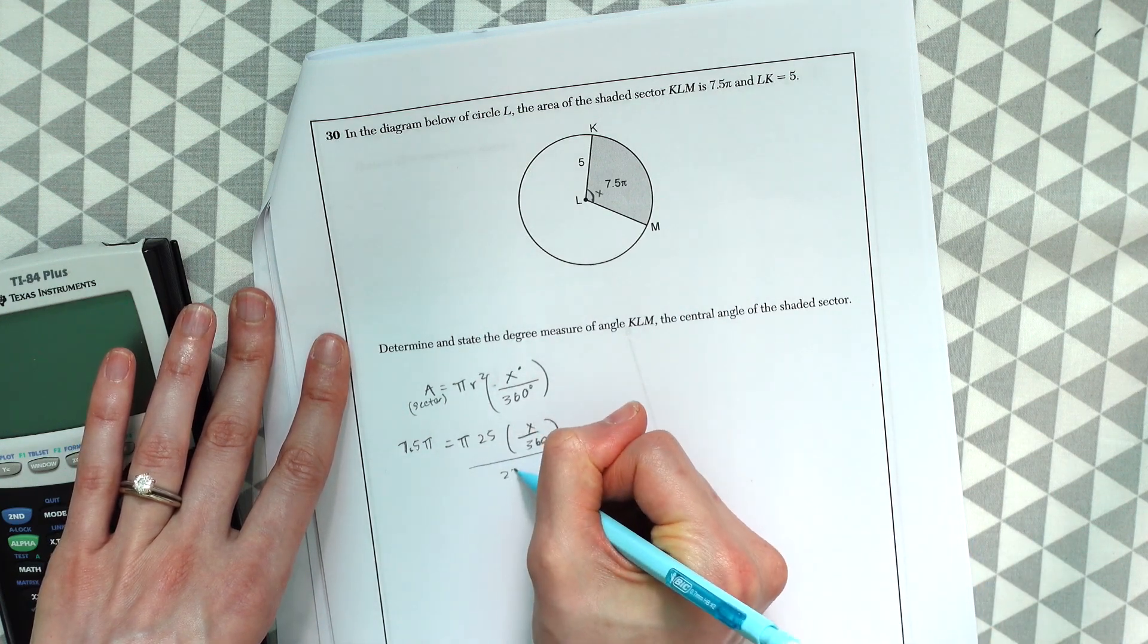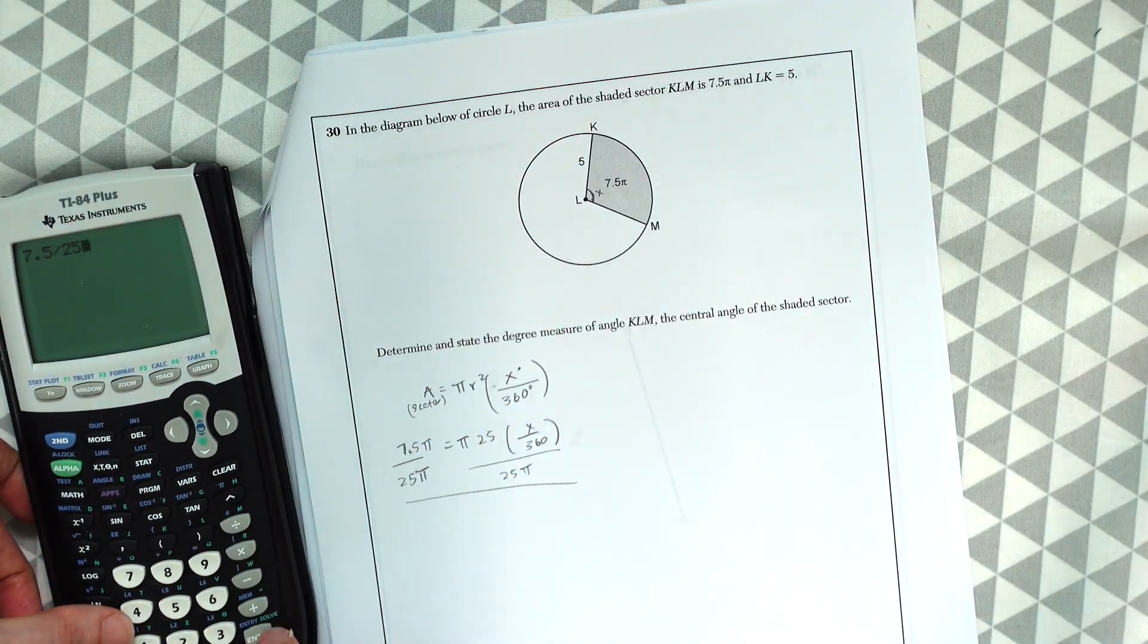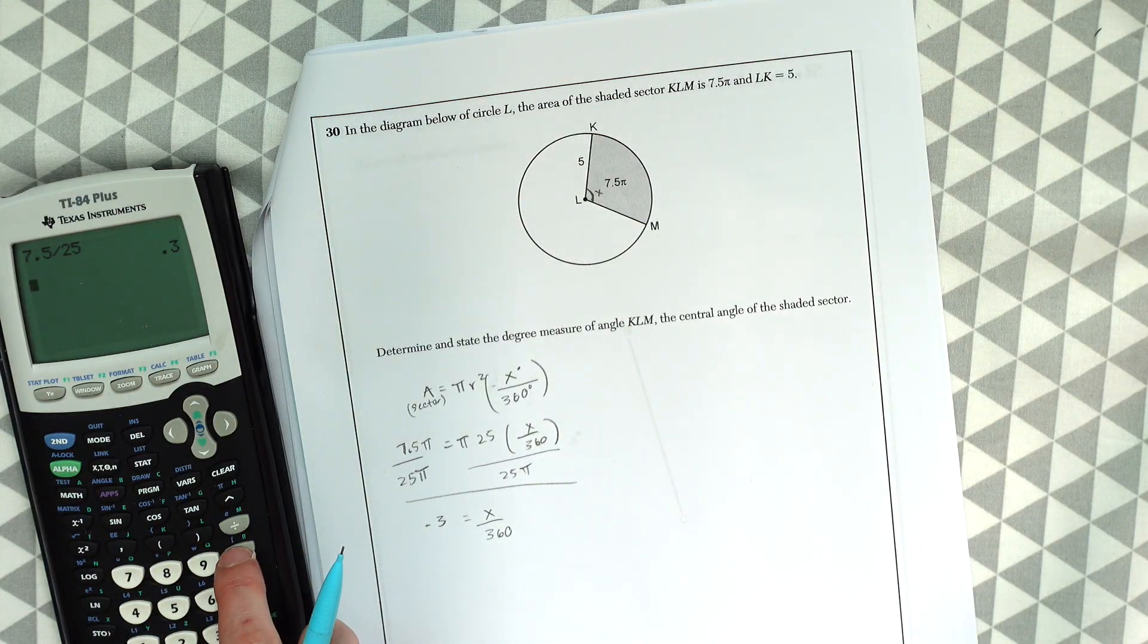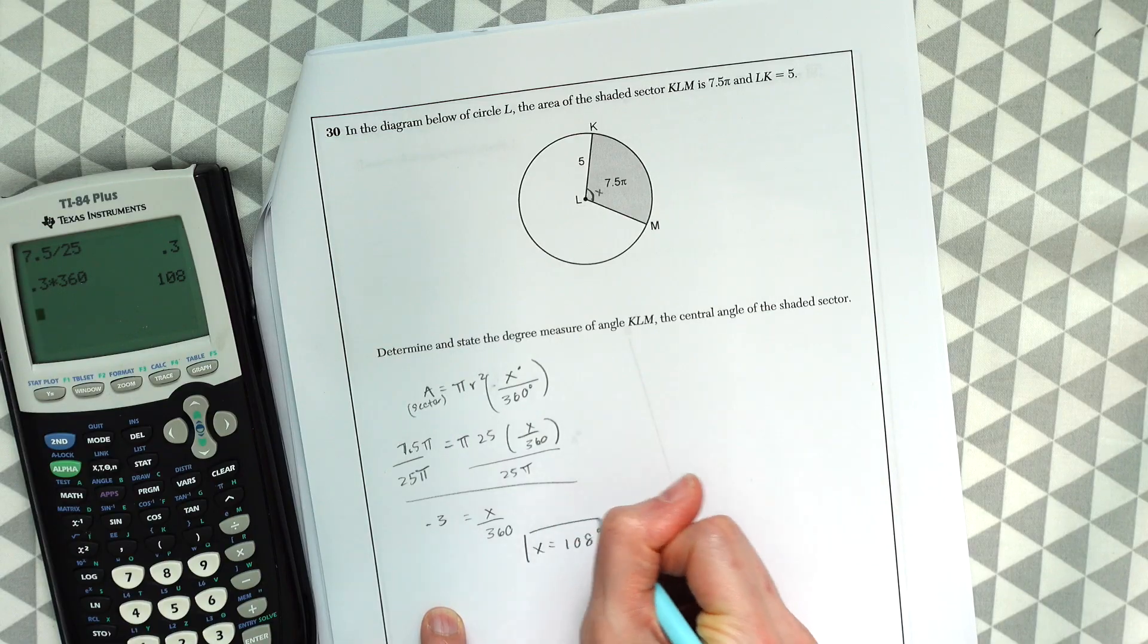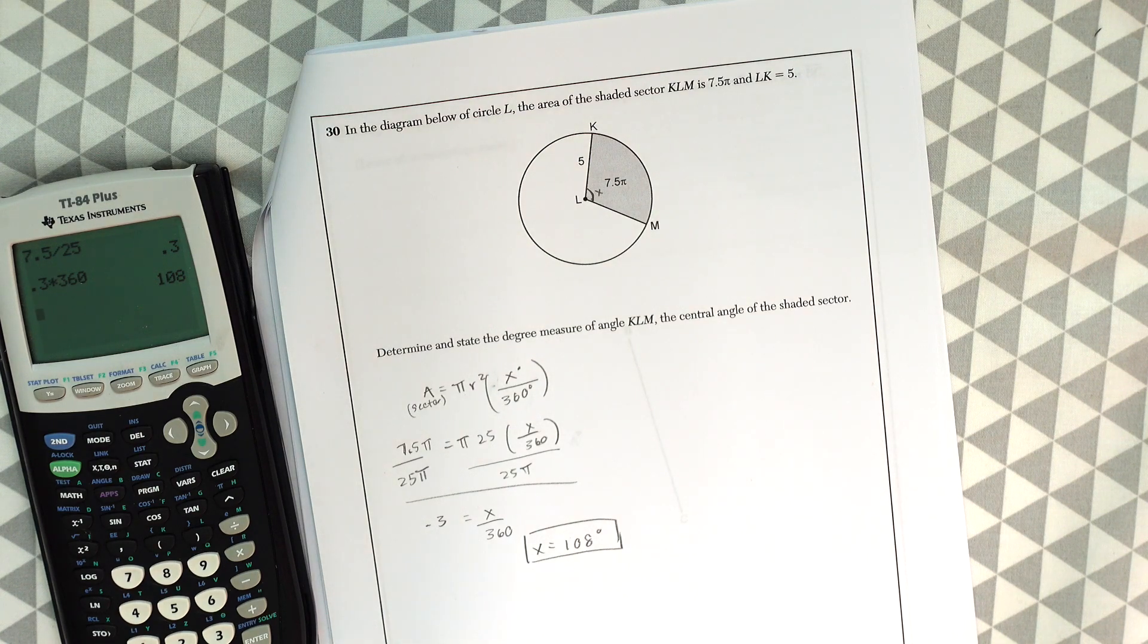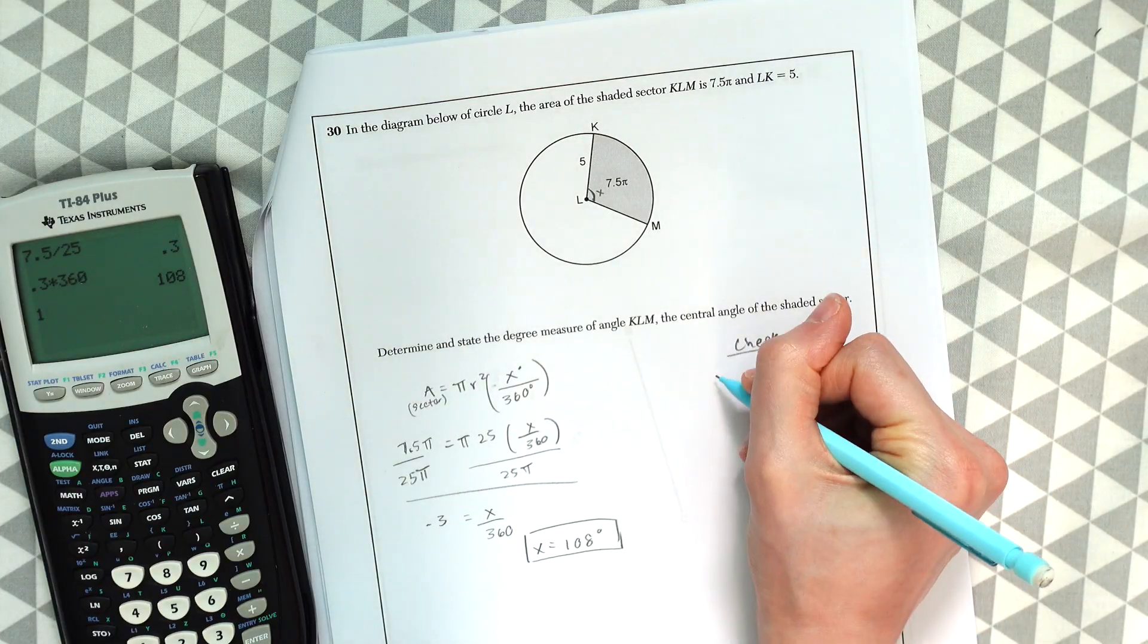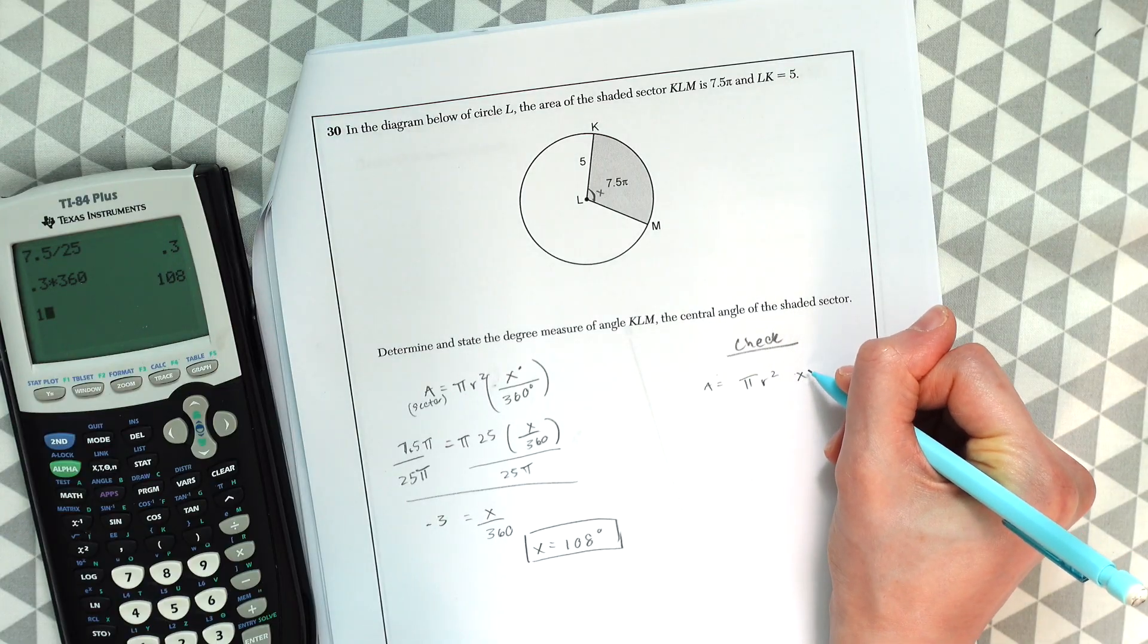That's what we're going to do. So we'll divide out 25 pi on both sides. So we get 0.3 is equal to x over 360. And all we need to do is cross multiply 360 times 0.3. So 0.3 times 360 and we get x is equal to 108. So x is equal to 108 degrees. And that's our answer. And if you're like, I feel a little unsure, if you did it the right way, you can always double check yourself too. So if we plugged in 108 and we wanted to find the area of the sector, we would do pi r squared times the x degrees over 360.